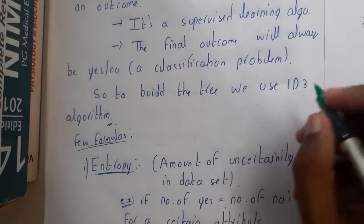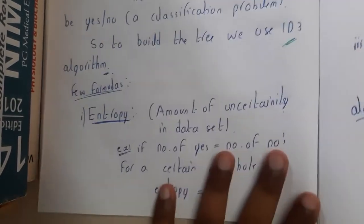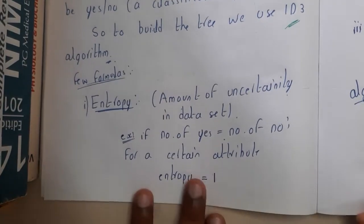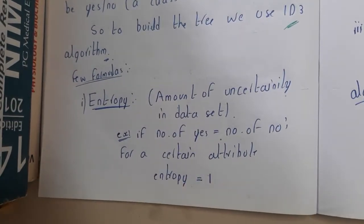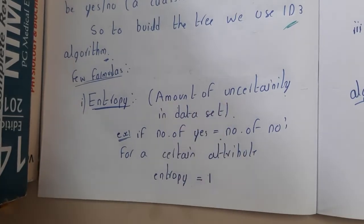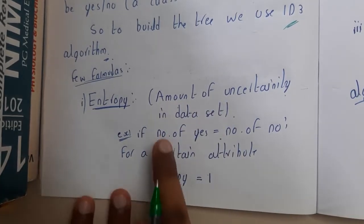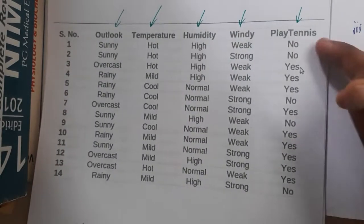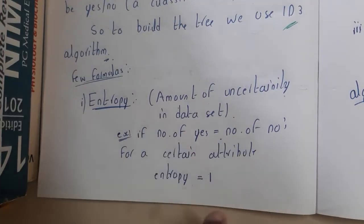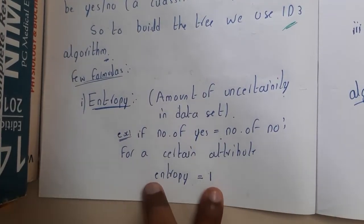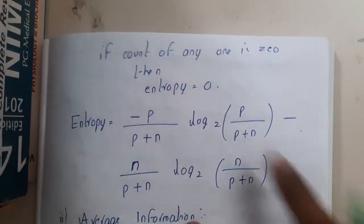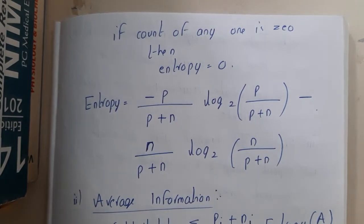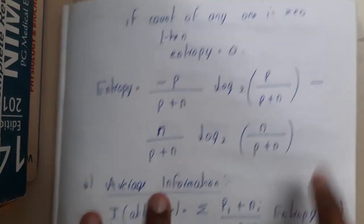To build the tree, we will be using the ID3 algorithm. There are a few formulas you should remember. The first formula is entropy — the amount of uncertainty in the data. If the number of yes's equals the number of no's, the entropy is 1. If any one of them is zero, the entropy is zero. If both are not equal and neither is zero, you need to apply the formula.